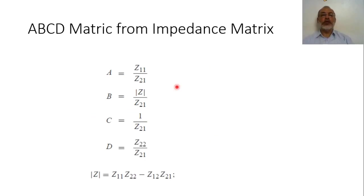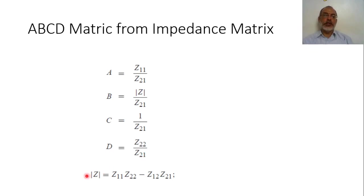If you are interested in obtaining the ABCD matrix from the impedance matrix: A = Z11/Z21, B = det(Z)/Z21, C = 1/Z21, and D = Z22/Z21, where det(Z) = Z11·Z22 − Z12·Z21. This is what was derived in the previous video.